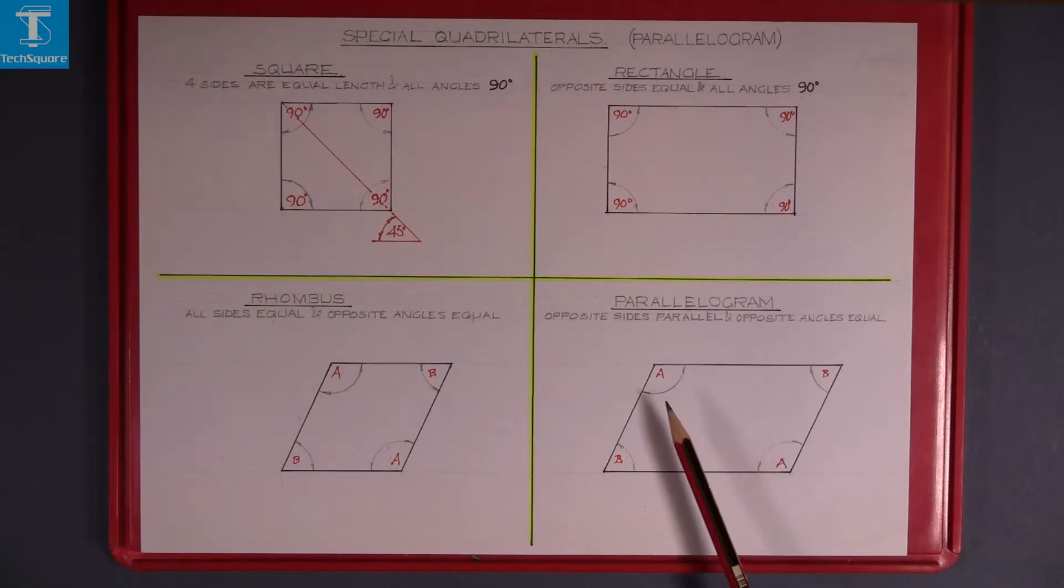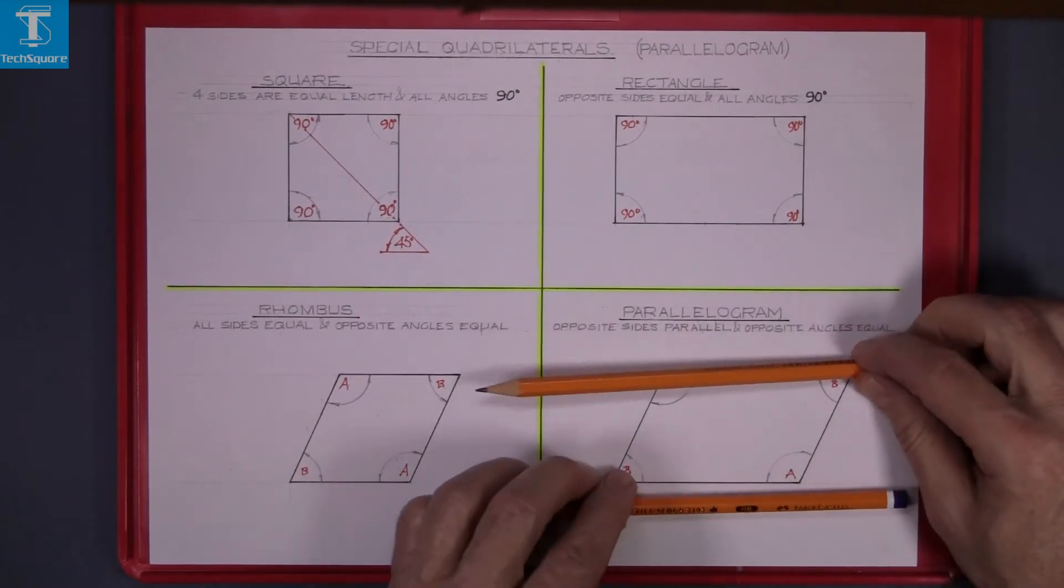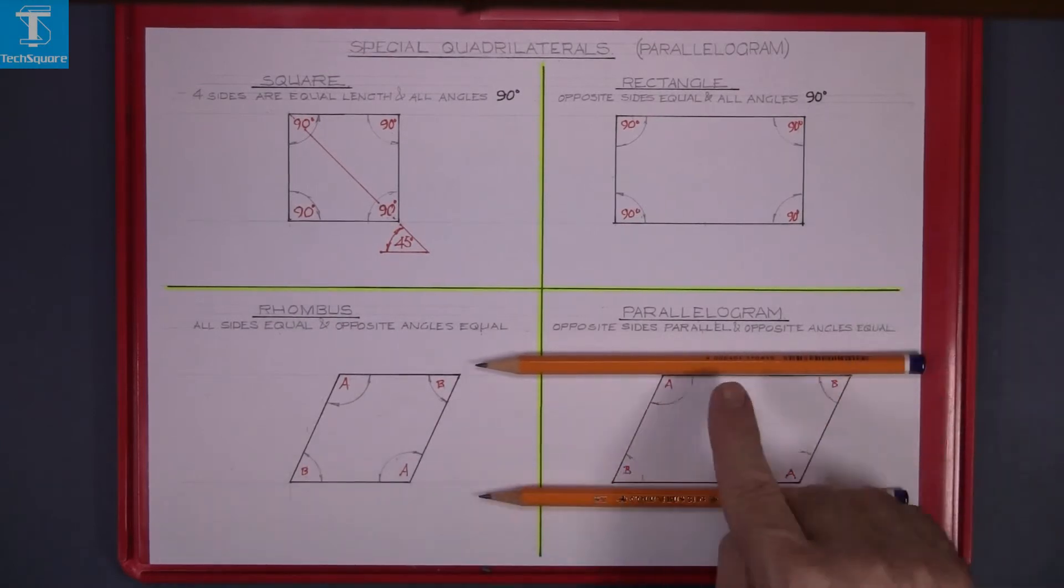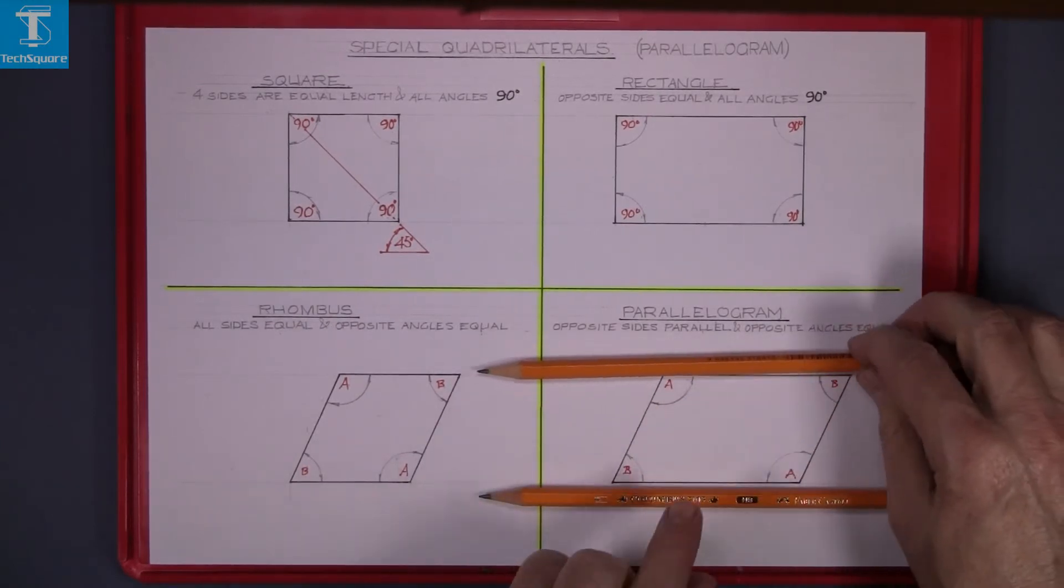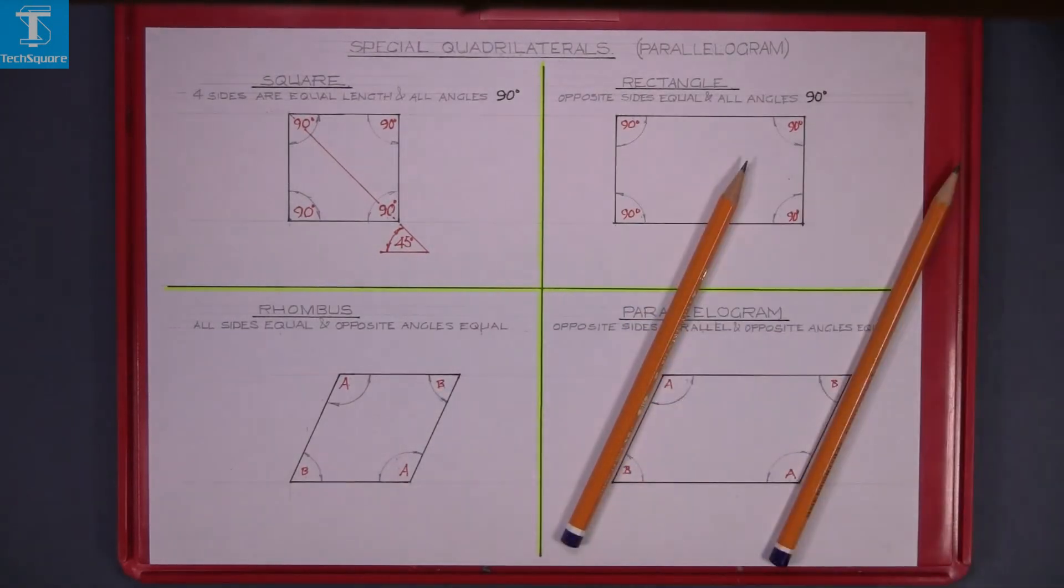And this here is a parallelogram. Parallel lines means that lines that will never meet. The two pencils, if they continued on, they will never meet. And these two are again parallel. So that's where parallelogram comes out of.